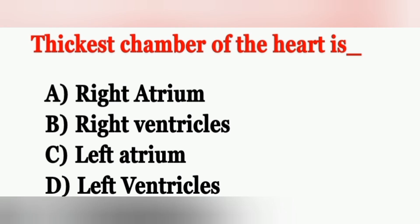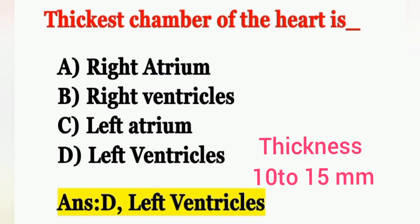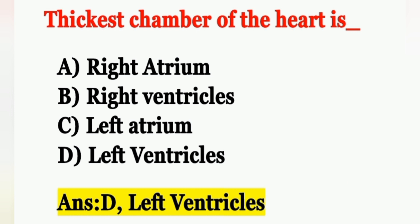Next question: The thickest chamber of the heart is — Option A: right atrium, Option B: right ventricles, Option C: left atrium, Option D: left ventricles. The correct answer is Option D, left ventricles. The left ventricle is the thickest chamber of the heart, with a thickness of about 10 to 15 mm. The thinnest chamber is the right atrium.